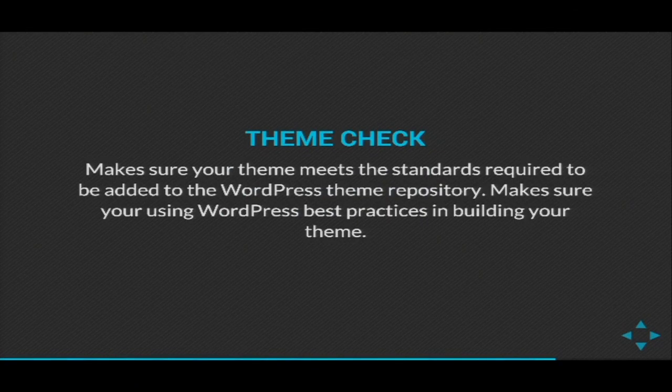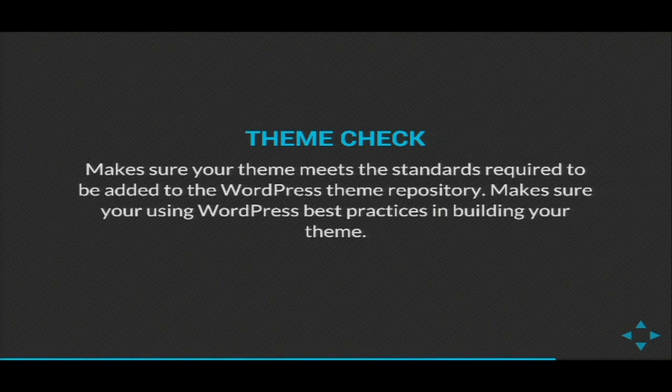Theme Check: if you're interested in developing themes to add to the WordPress.org theme repository, you need to become familiar with Theme Check. This is the plugin the theme review team uses to make sure you're following the guidelines set in place for the repository. It does a sanity check — are your alignment classes set, do you have a sticky class set, do you have any hard-coded URLs? Even if you're working on custom themes for clients with no intention of submitting to the repository, it's still a good idea to run your themes through Theme Check.